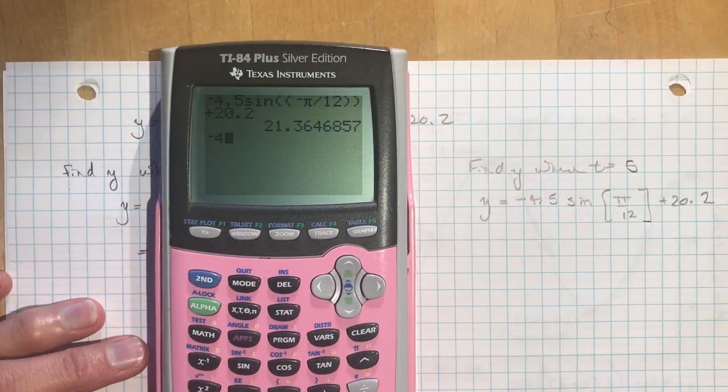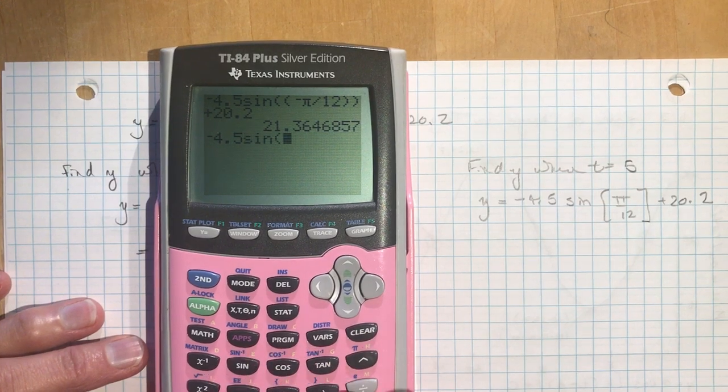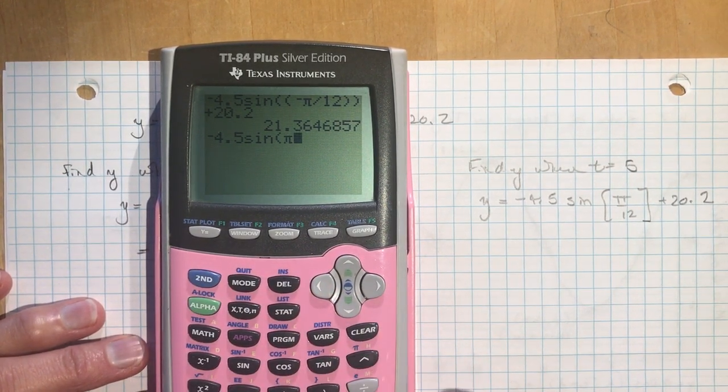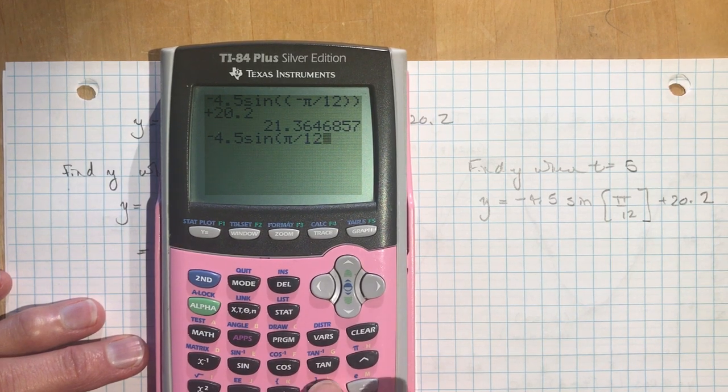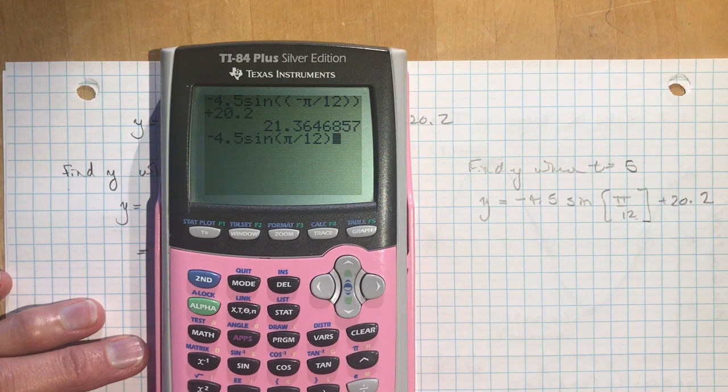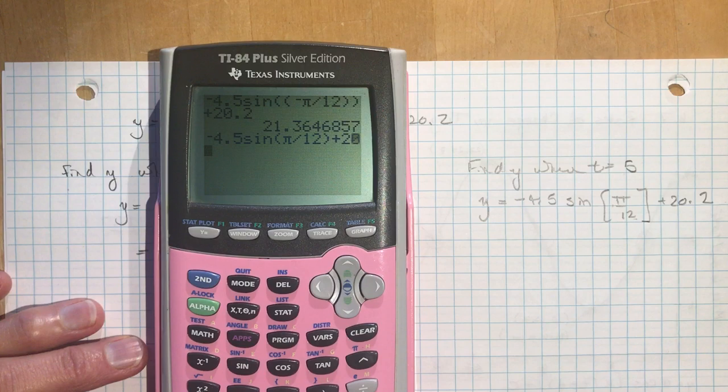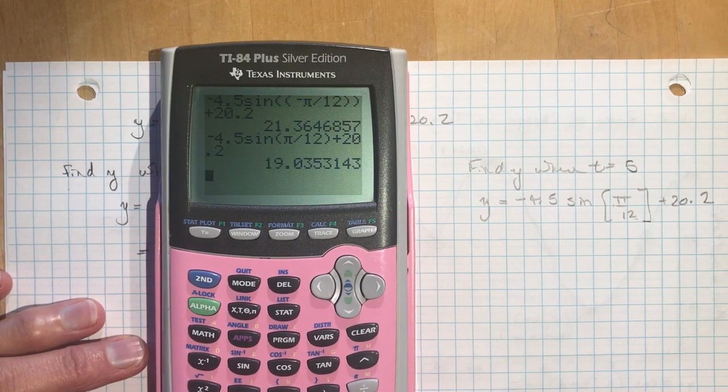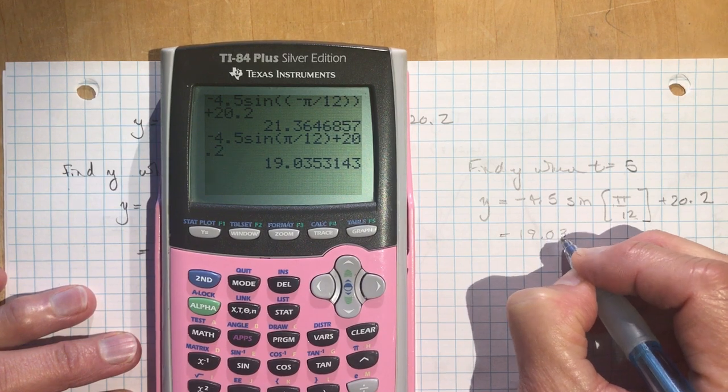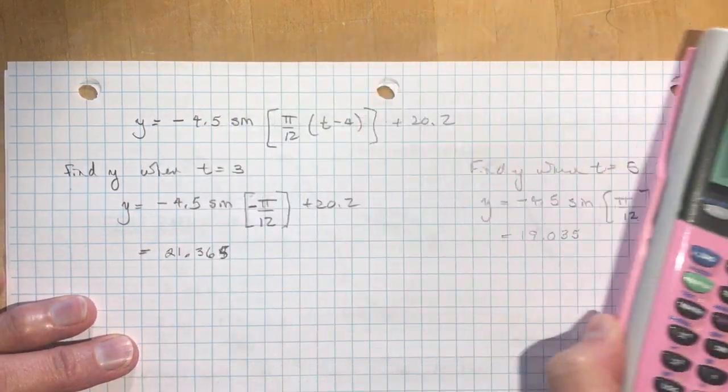And then I'm going to do minus 4.5 sine of π divided by 12, 12, okay, because we said 5 minus 4 was 1, and then we're going to add 20.2, that's going to give me 19.035.